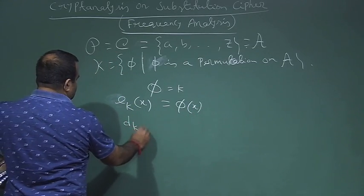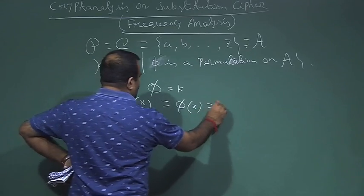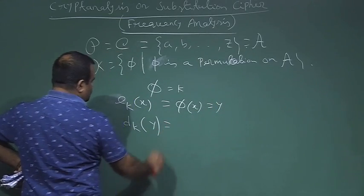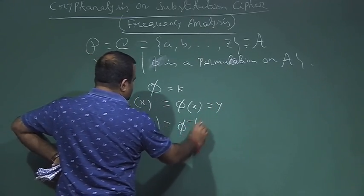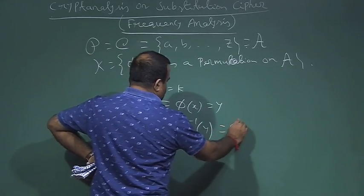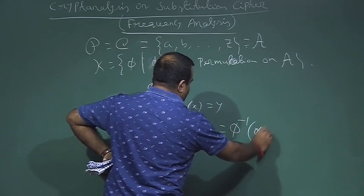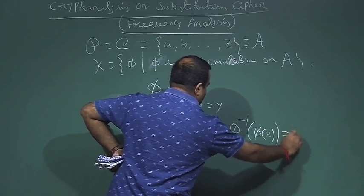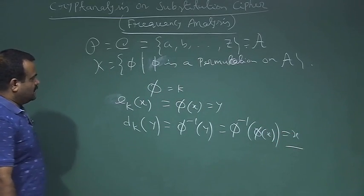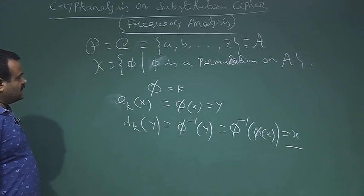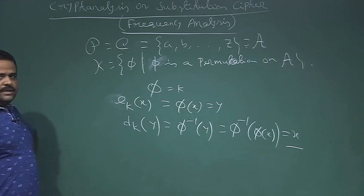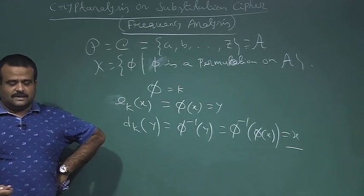Decryption is d(y), and if y = φ(x) then d(y) = φ⁻¹(y), which is φ⁻¹(φ(x)), giving us x. This is the substitution cipher, and we have seen one example in an earlier class.